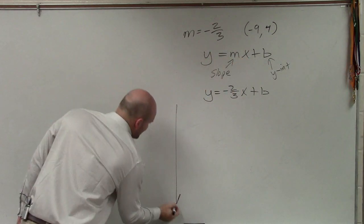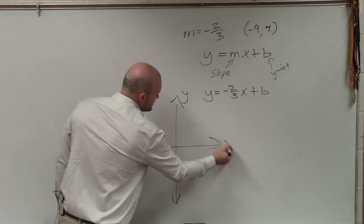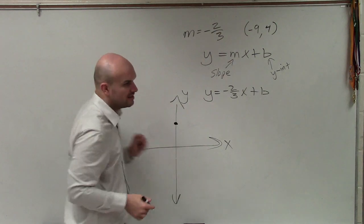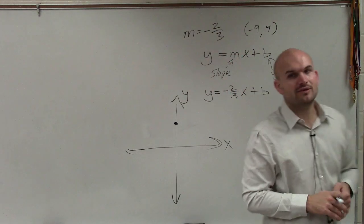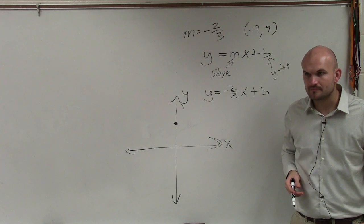It represents the y-intercept, where the graph crosses the y-axis. When we are graphing, if you guys remember, we had a y-axis and an x-axis. So whatever the value of b is, that's going to be the value on the y-axis where the graph crosses.